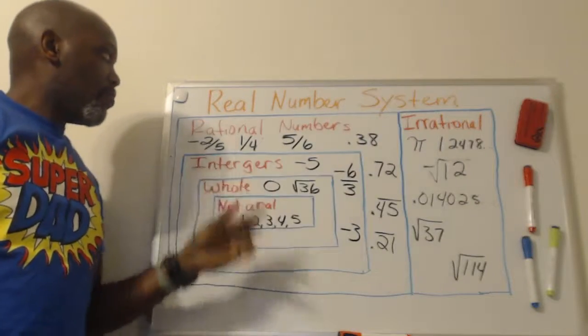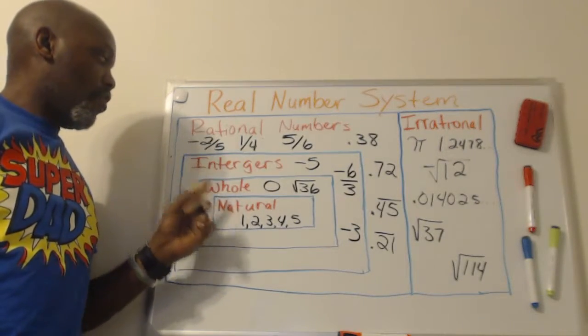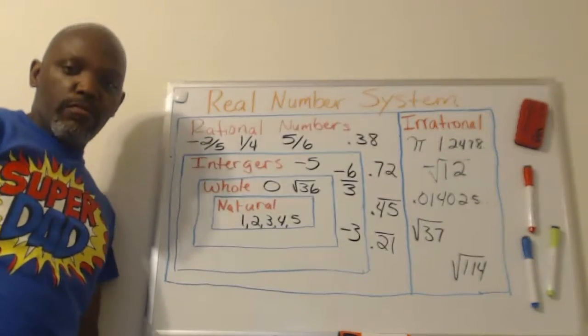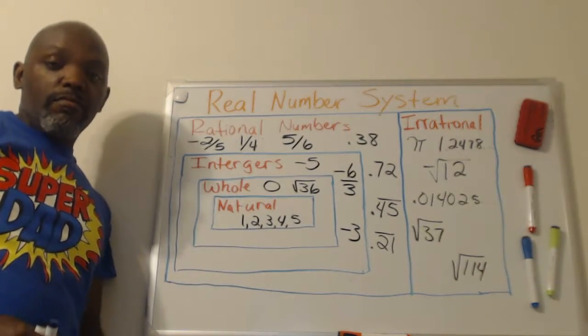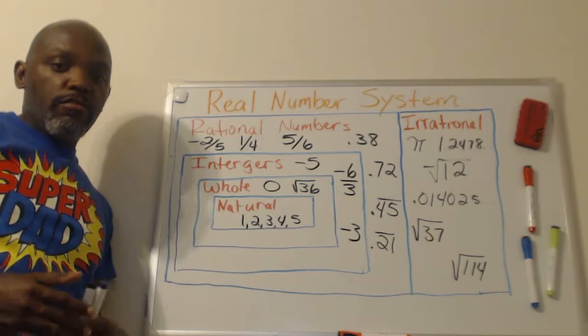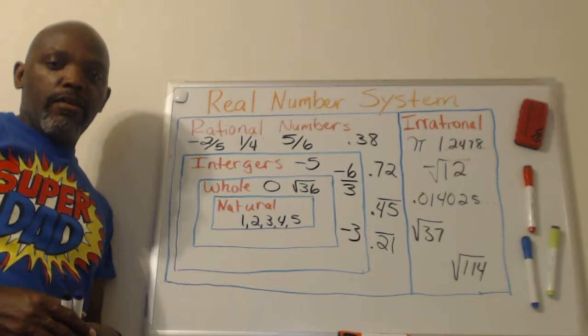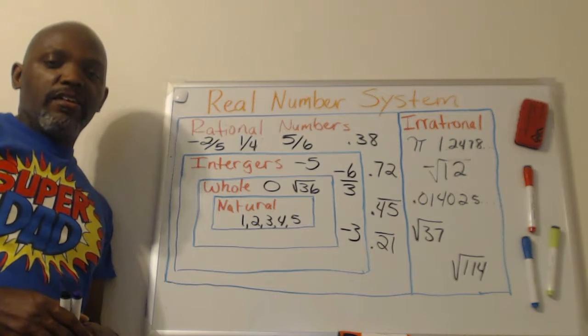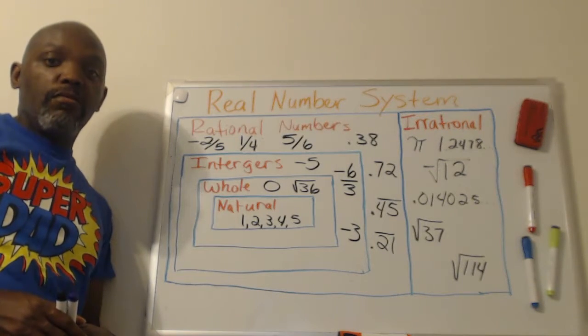And altogether, the rational integers, whole number, natural numbers, irrational numbers make up the real number system. So that's a short version. Pretty much all you really need to know, and hopefully you'll do well in the quiz. Thank you for your time, and good luck. Thank you. Bye.